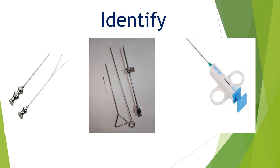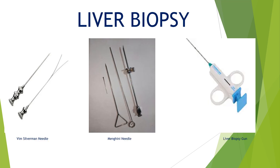Can you identify these needles? The first needle on your left-hand side is the liver biopsy needle by name Vim-Silverman needle. As you can see, this long needle has a stilette, and separately there is a bifid cutting needle as well.